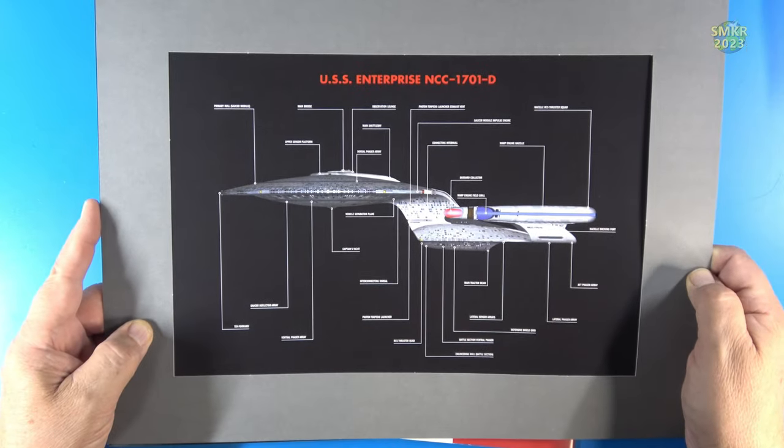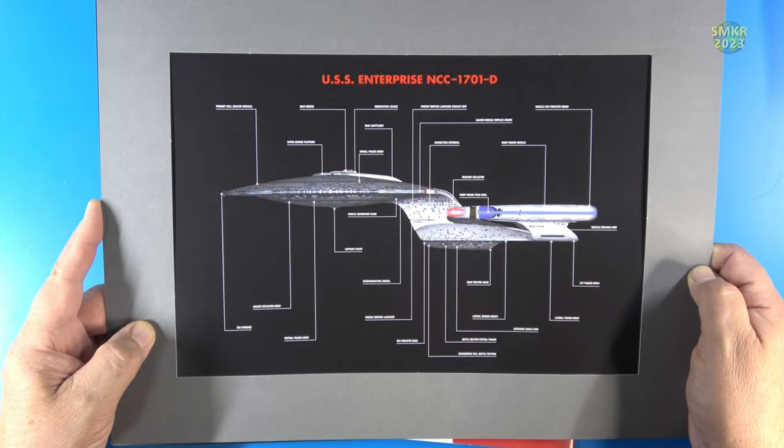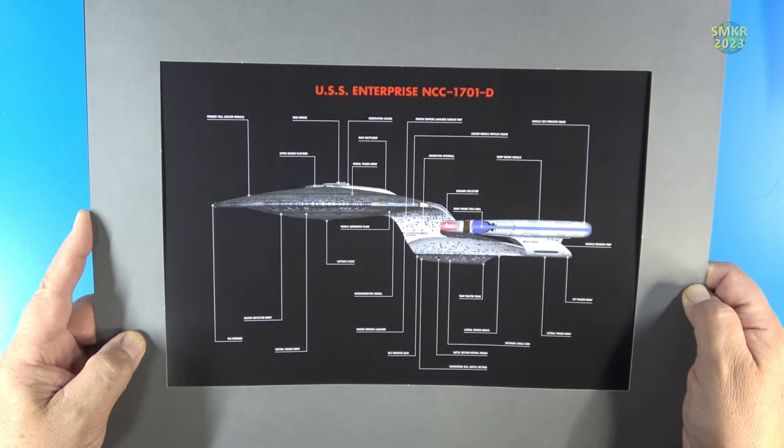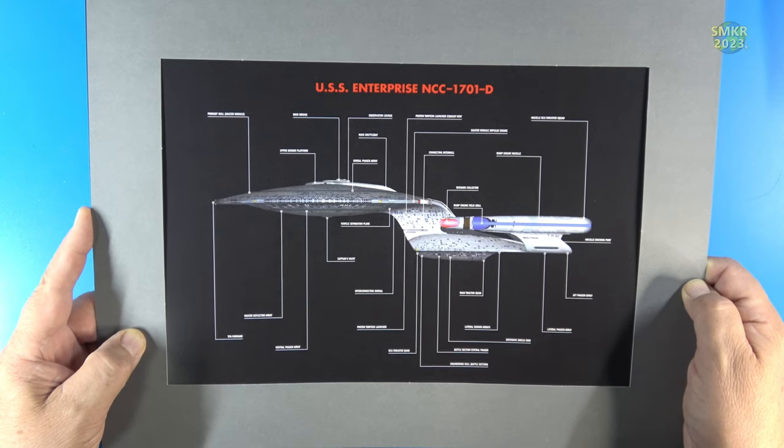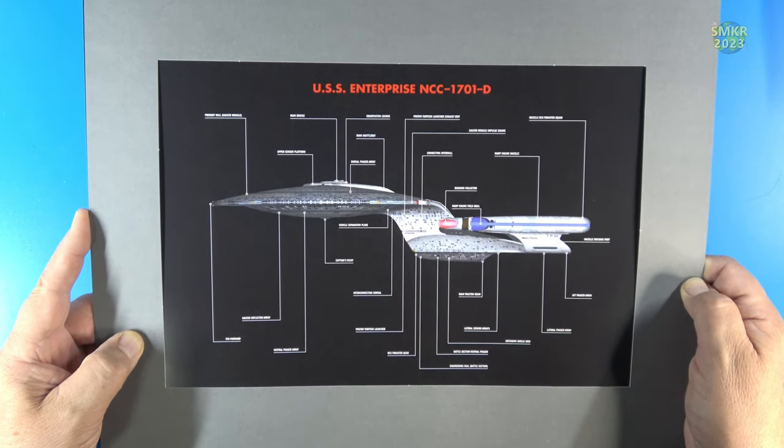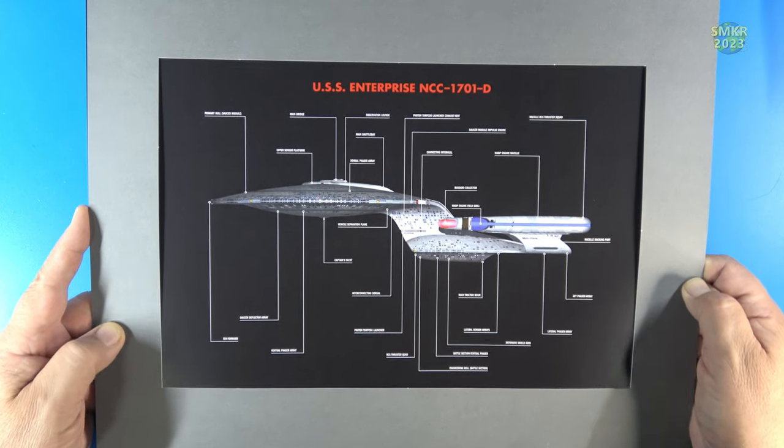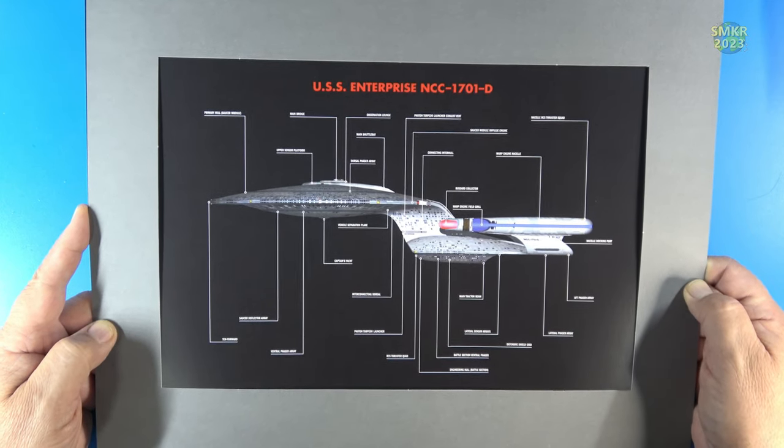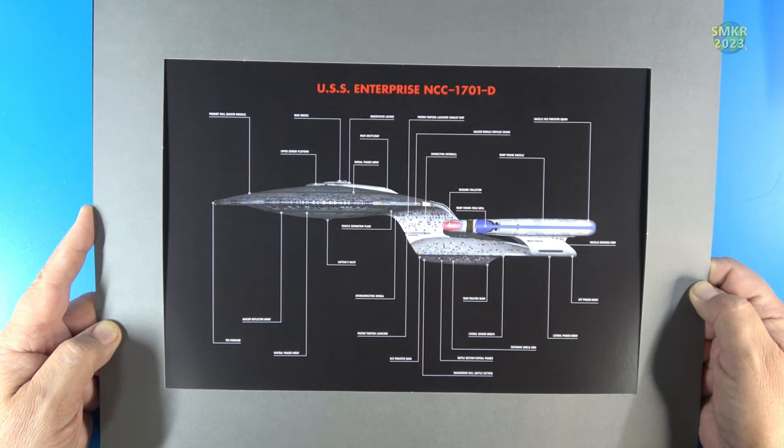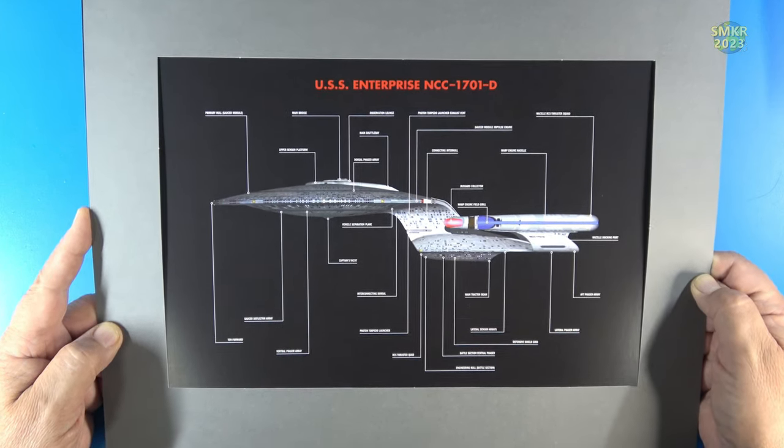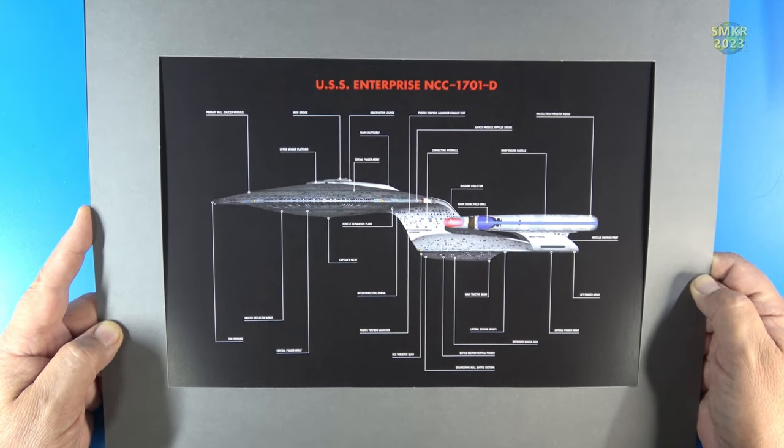Next, I also received this wonderful lithograph that was free with my subscription. Your gifts can vary, but this is what I received here. As you can see, it highlights all the different areas of the Enterprise-D. It's wonderful, and I can't wait to get a frame for it and hang it in my new studio that I'm in the process of preparing. Now, let's go ahead and get started with the build.